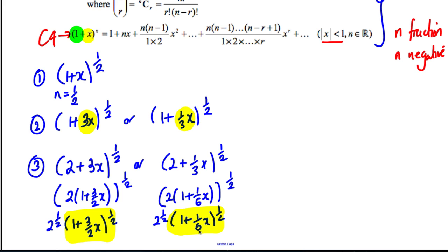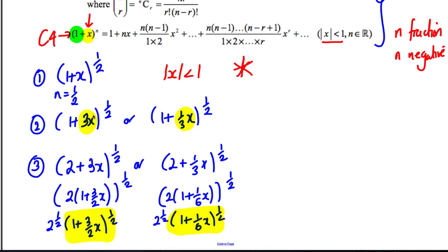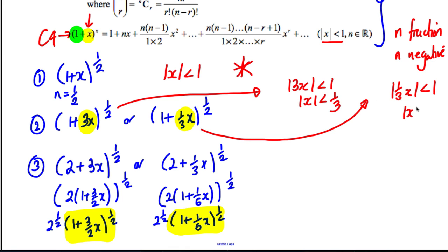One of the most important things to talk about is this expansion is only valid if the modulus of that expression is less than 1. In case 1, this is only true if |X| < 1. You must write this down - this is important. In this case, |3X| < 1 means |X| < 1/3. For |X/3| < 1, we have |X| < 3.